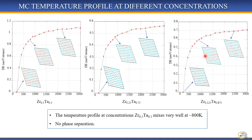Here is the profile at 12.5 percent zirconium and 87.5 percent Tantalum. The systems mix very well and there is no phase separation since the energy difference is very small, which confirms the miscible constituent predicted by the binary ground state diagram.